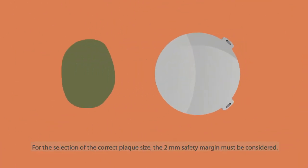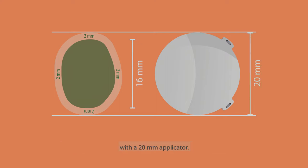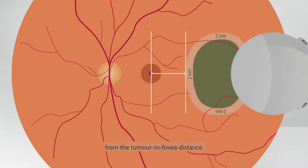For the selection of the correct plaque size, the 2 mm safety margin must be considered. This means, for example, that tumors up to 16 mm can be treated with a 20 mm applicator. The plaque to fovea distance is estimated by subtracting the safety margin from the tumor to fovea distance.